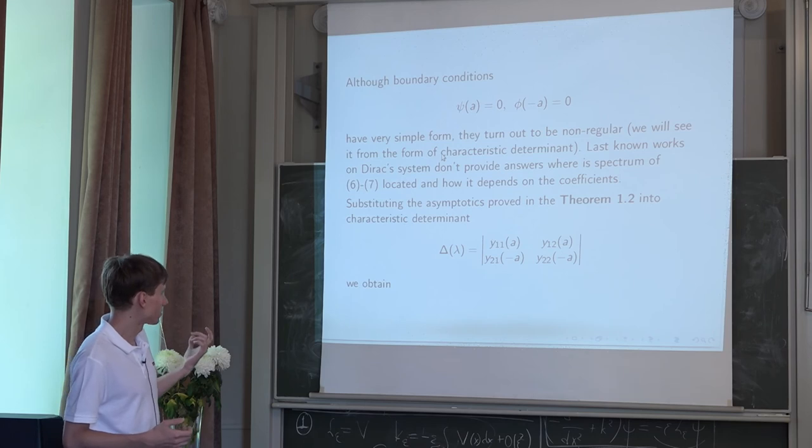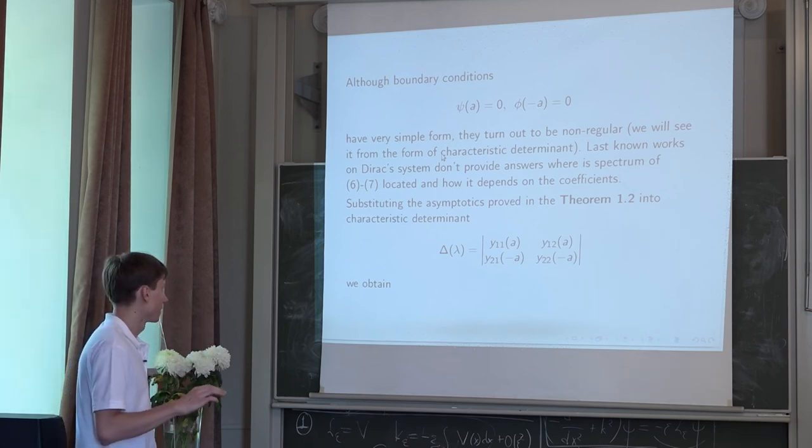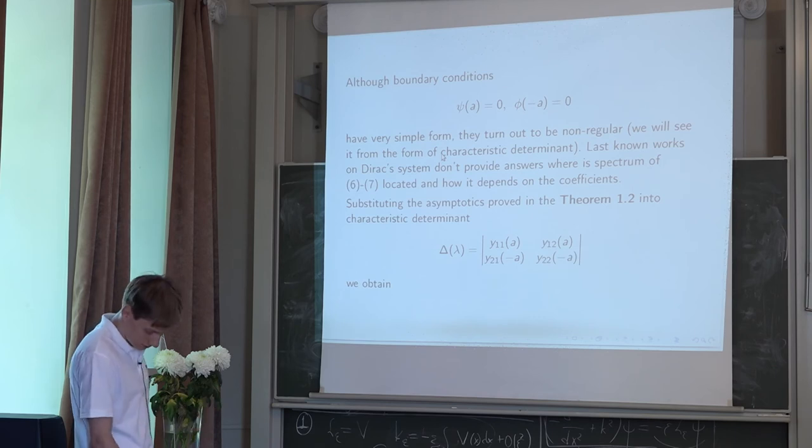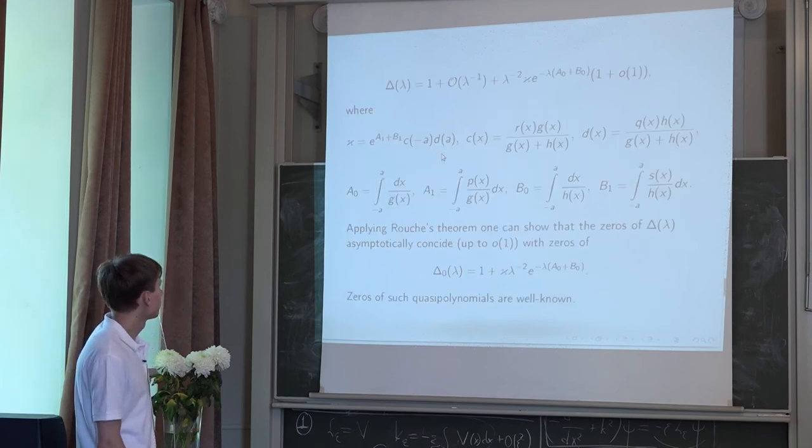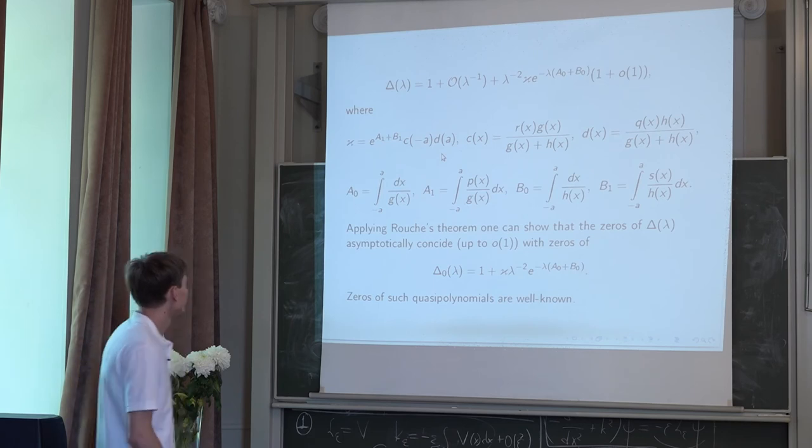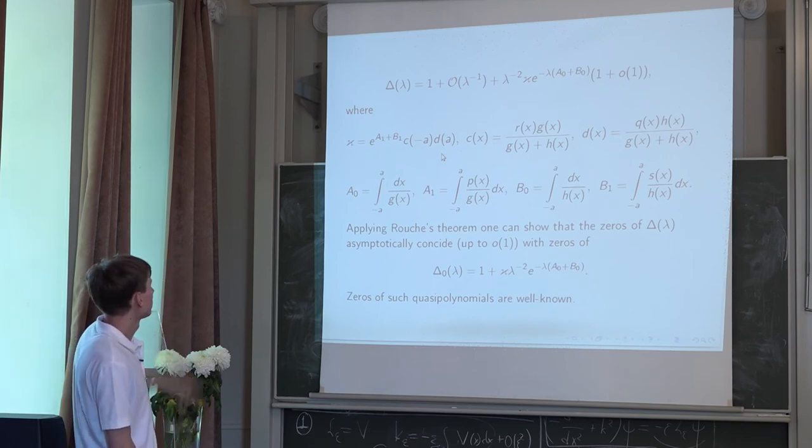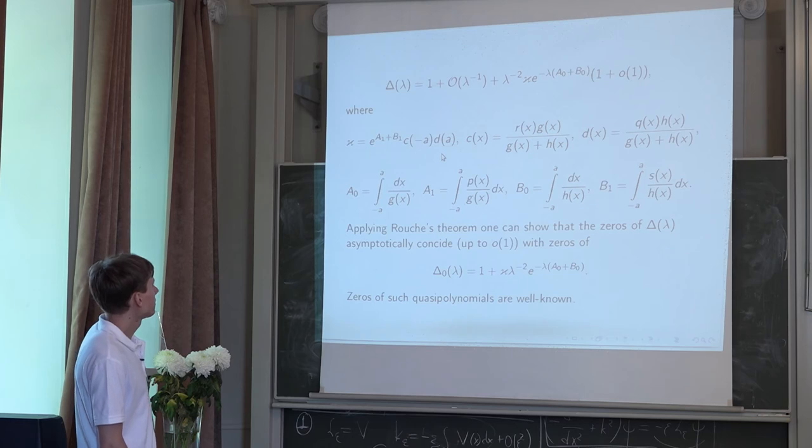And we will see it from the form of the characteristic determinant. Substituting the asymptotics proved in the theorem for absolutely continuous case, in the characteristic determinant,